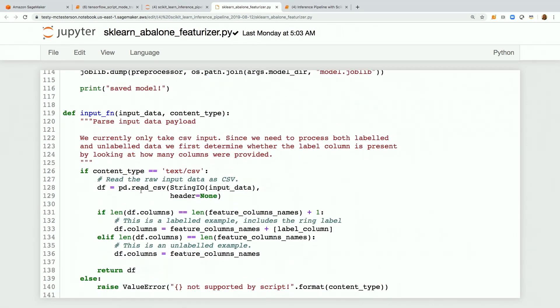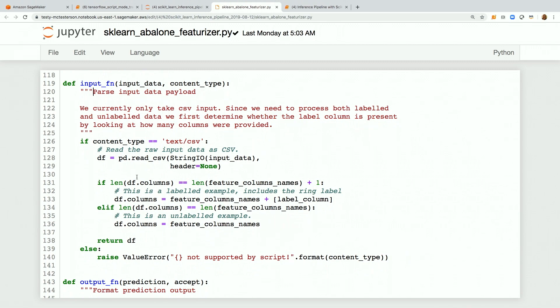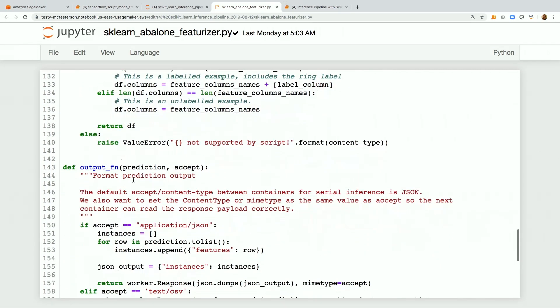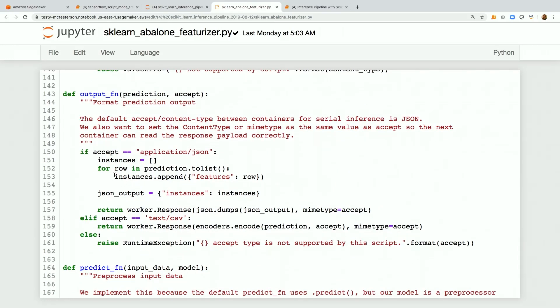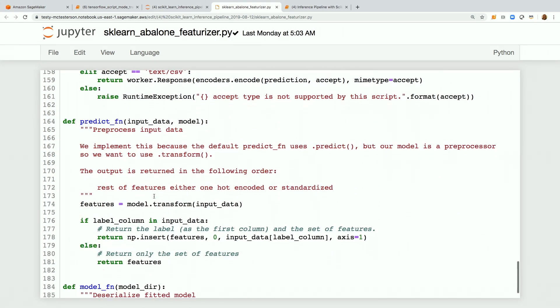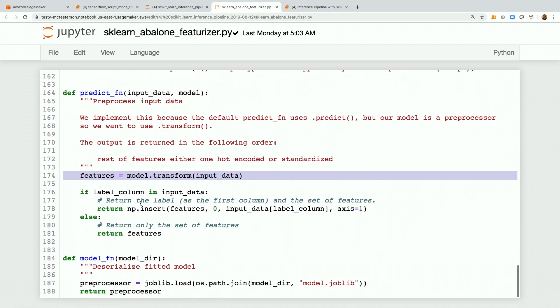A couple other functions. Input function here is going to take the raw data on the prediction side and convert that to a data frame. And then the output function is going to loop through our instances and append it. That is calling model.transform on that input data. The model here is a feature engineering model - that's not a machine learning model, but that is a feature engineering model.